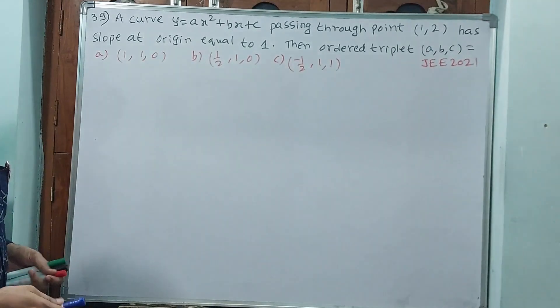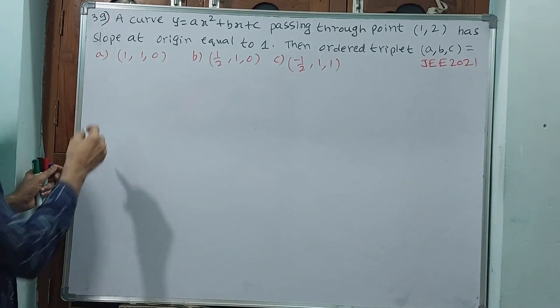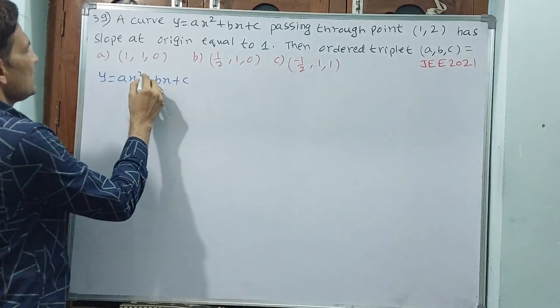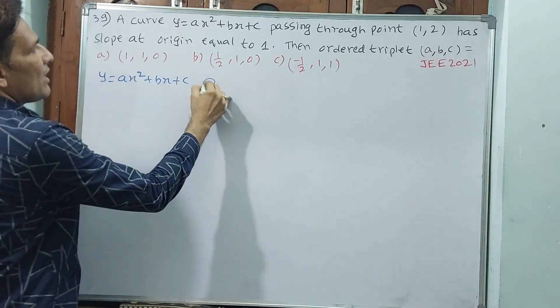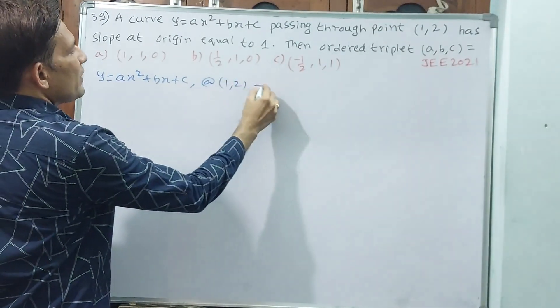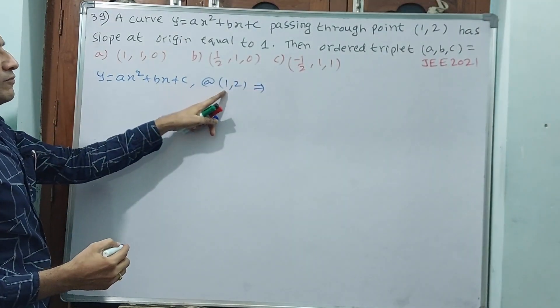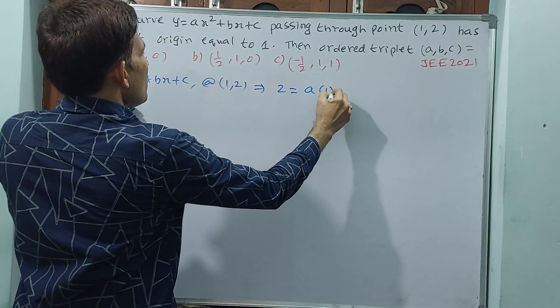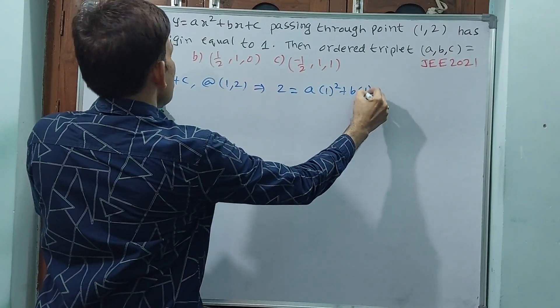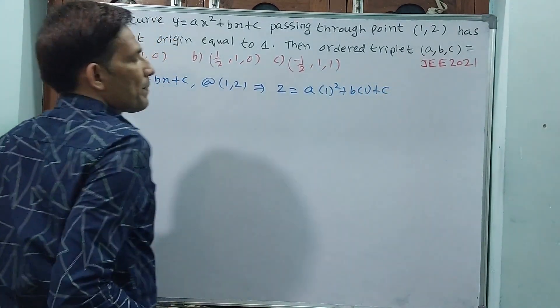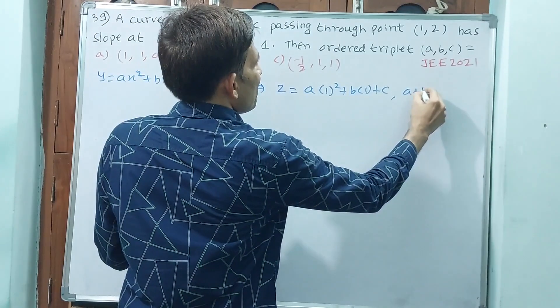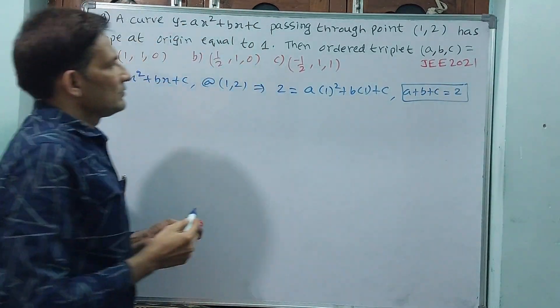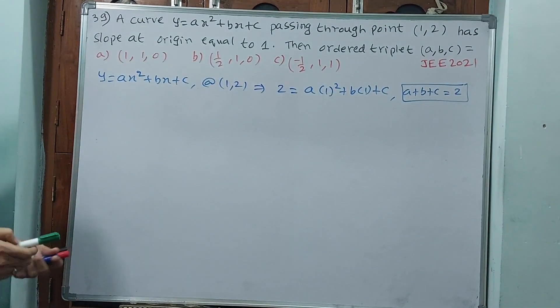One by one we will go. The curve is y = ax² + bx + c. At (1,2), this implies 2 = a(1)² + b(1) + c. That means we can write a + b + c = 2. This is one equation.